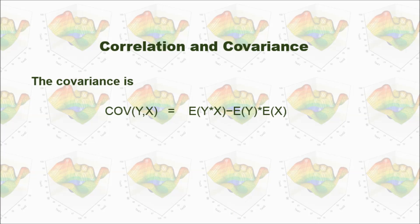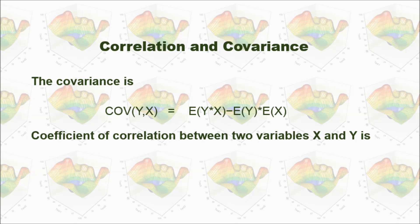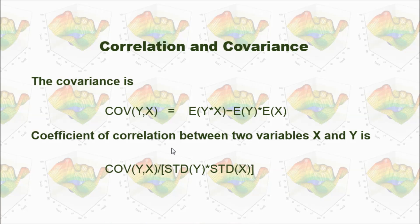Assume we have independent variable x and dependent variable y. The covariance of x and y is calculated by taking the expected value of y times x, minus the expected value of y times the expected value of x. The problem with covariance is it's hard to understand, so we use the coefficient of correlation. Correlation is calculated by dividing the covariance by the standard deviation of y times the standard deviation of x.